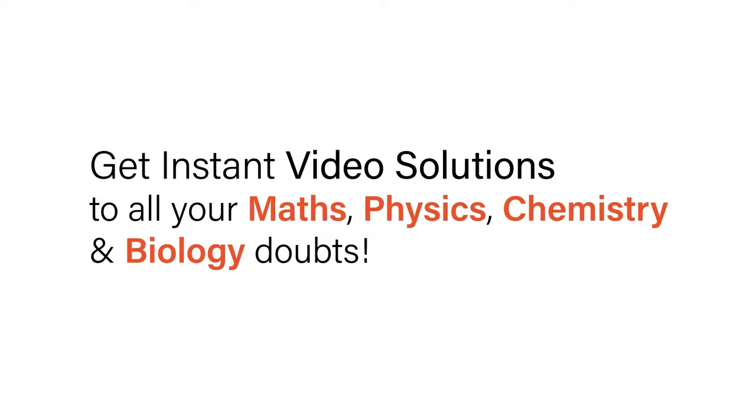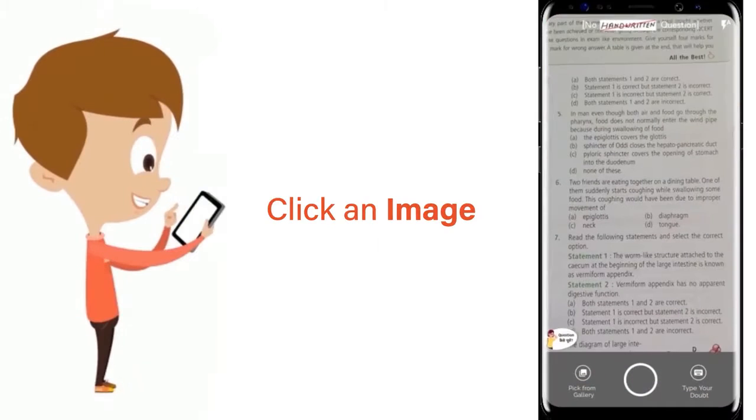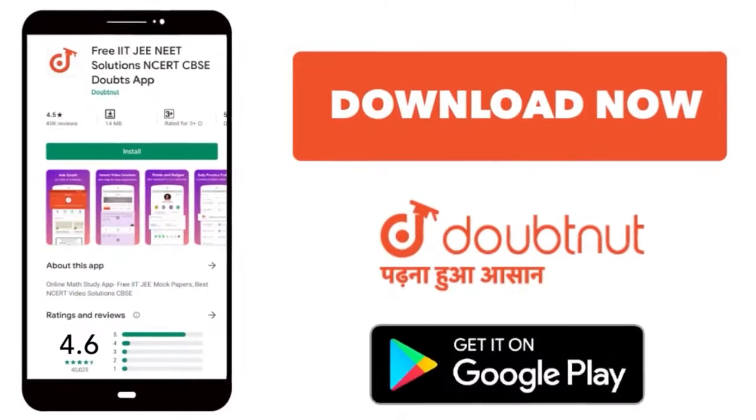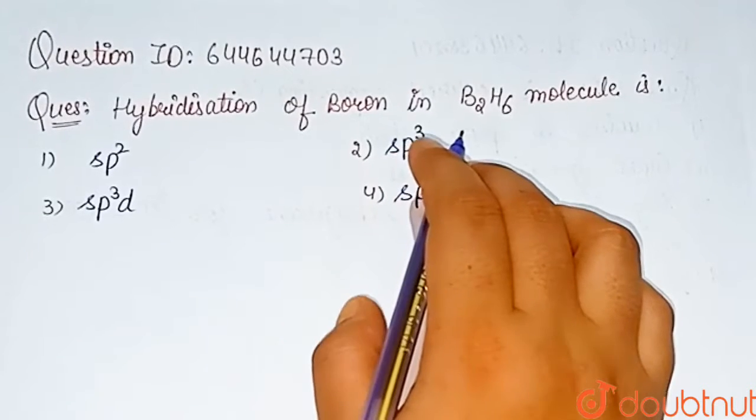With Doubtnut, get instant video solutions to all your math, physics, chemistry, and biology doubts. Just click the image of the question, crop the question, and get instant video solution. Download Doubtnut app today. The question is: hybridization of boron in B₂H₆ molecule.